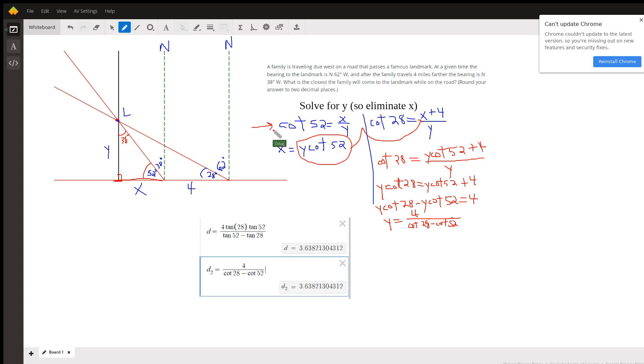As far as the triangle with the 28 degree acute angle, the cotangent of 28 is the adjacent side, which is x plus 4 over y. Now if you use the substitution method, you can solve this first equation for x and substitute this expression for x into the second equation.